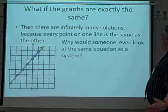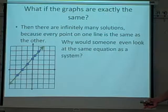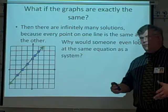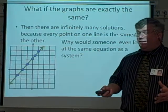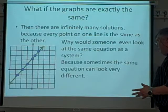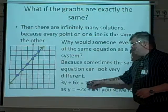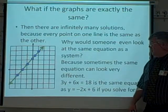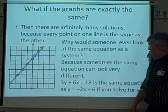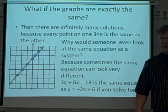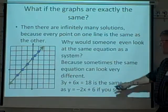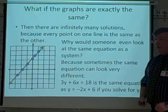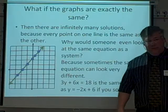Now, why would someone even look at the same equation as a system of equations? Well, sometimes when you first put the equations down, they don't look exactly the same. Let's take a look at these two. These two equations are not exactly the same in looks. But when you go to solve this one for y, you're going to find out that these two equations are exactly the same. They just don't look the same. So when you graph these two, they're going to end up being on the same line, and they're going to have infinitely many solutions.